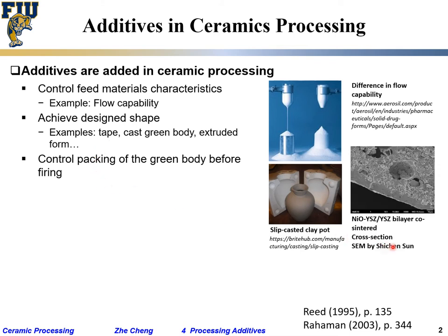Additives also help control packing of the green body before firing. For example, in the bilayer structure shown earlier for a fuel cell, one layer is relatively denser with hopefully closed pores, and the other thicker layer has open porosity with very large pores to facilitate gas distribution and transport. You have to add additives to help you control this microstructure.